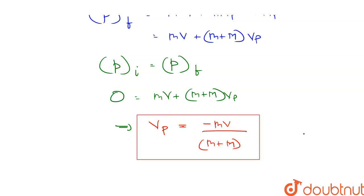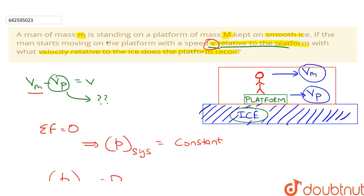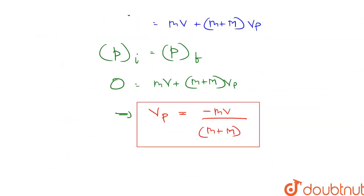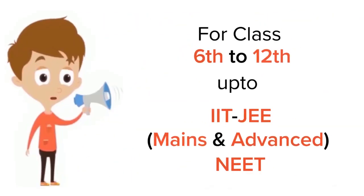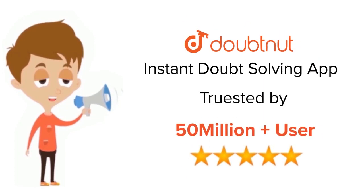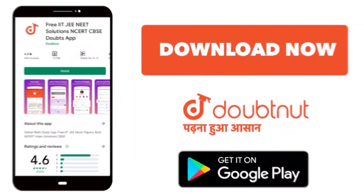This is our answer. The negative sign indicates that the platform moves in the opposite direction to the man. For class 6-12, IIT-JEE and NEET level, trusted by more than 5 crore students, download Doubtnet.